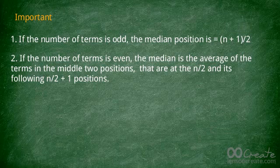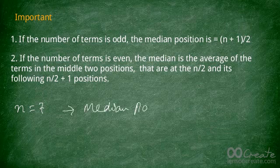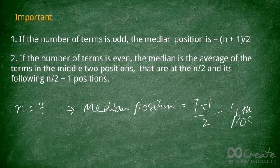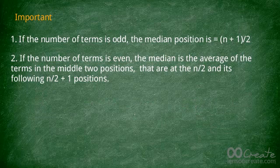Here's an important thing to remember: if the number of terms is odd, there is only one value in the middle, and that position is (n + 1) / 2. For example, if there are 7 terms, the middle position is (7 + 1) / 2 = 4, so the median is at the fourth position.